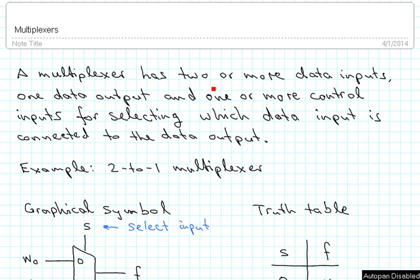A multiplexer has two or more data inputs, one data output and one or more control inputs for selecting which of the data inputs is actually connected to the data output.